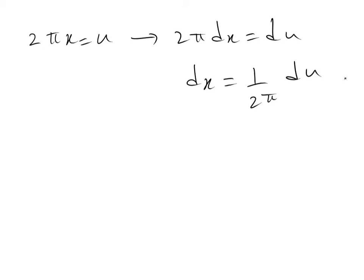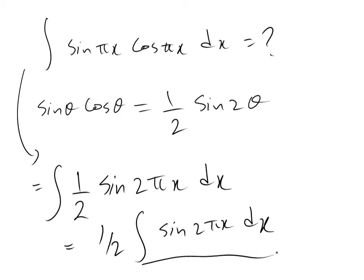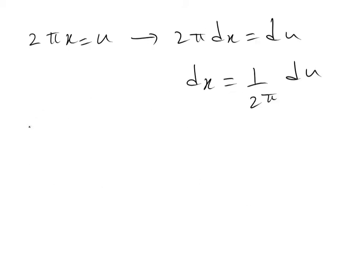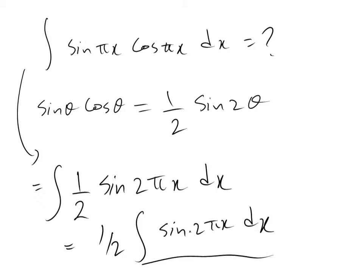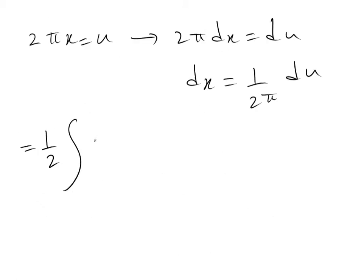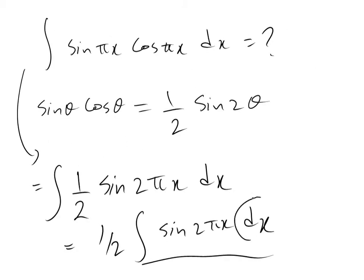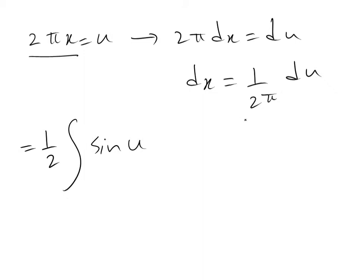So if you substitute these expressions now into this integral, what you get, that will be equal to 1 divided by 2 integral of, instead of sine 2 pi x, I write sine u. And instead of dx, I write 1 divided by 2 pi times du.